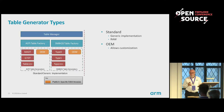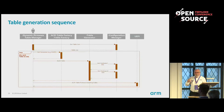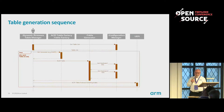The sequence is fairly simple. We start by asking the config manager what tables it wants to build, then for each table we ask it for a generator and get the hardware information. Having generated the table, we pass it to the EDK2 framework to give to the operating system.